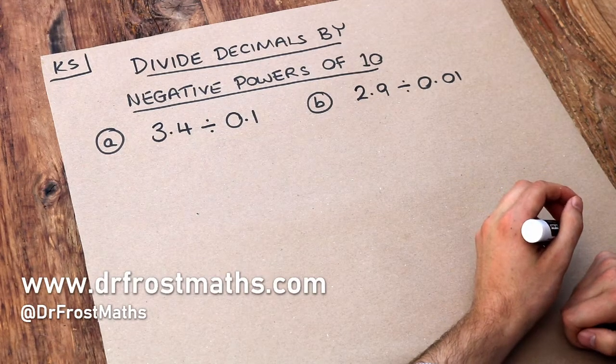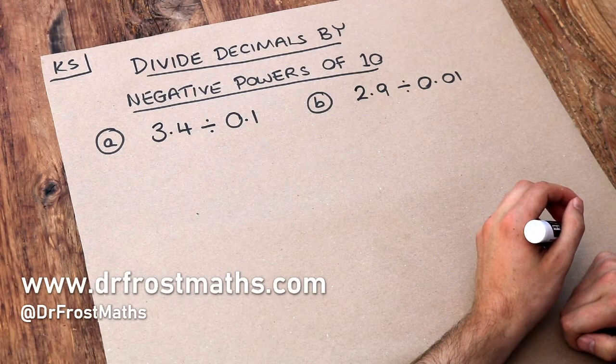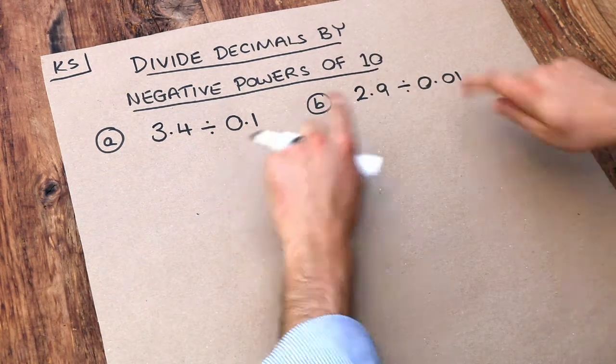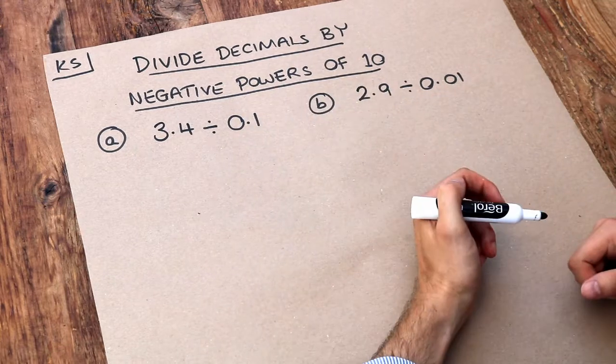Hello and welcome to this Dr. Frost Maths key skill video on dividing decimals by negative powers of 10. And what I mean by negative powers of 10 are things like 0.1, 0.01, 0.001, etc.